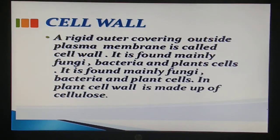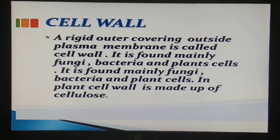The cell wall is a rigid outer covering outside the plasma membrane, found in plant cells, fungi, and bacteria, and is made up of cellulose. It is non-living and freely permeable - not selectively permeable as in the case of the plasma membrane - meaning it allows any material to pass through. It determines the shape of a plant and is made up of cellulose and pectin.